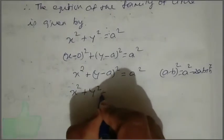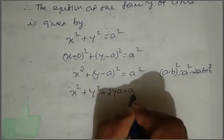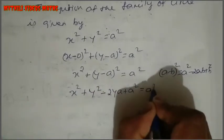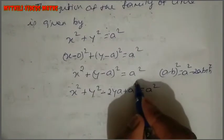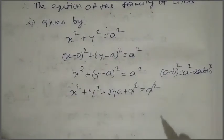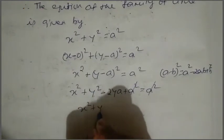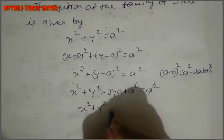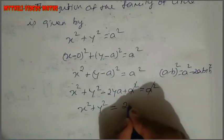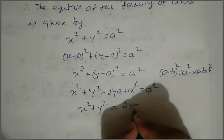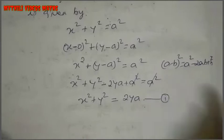Expanding gives x minus 0 squared plus y minus a squared equals a squared, which simplifies to x² + y² − 2ya + a² = a². The a² terms cancel on both sides, leaving x² + y² = 2ya. This is Equation 1.